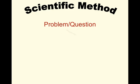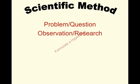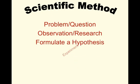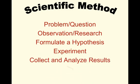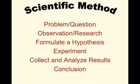With the scientific method we start with identifying the problem — it's usually in the form of a question. We do some observations or research about that problem and then we can formulate a hypothesis, your educated guess. Then we design an experiment. From that experiment we collect and analyze our data and then we can come up with a conclusion.